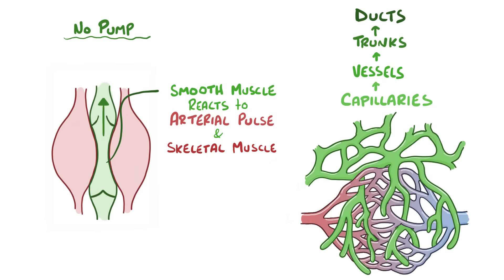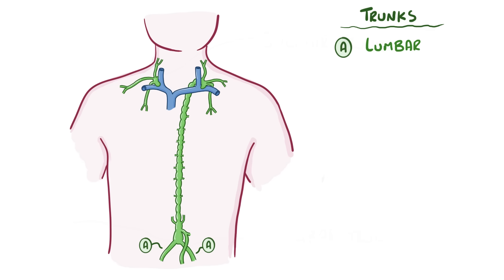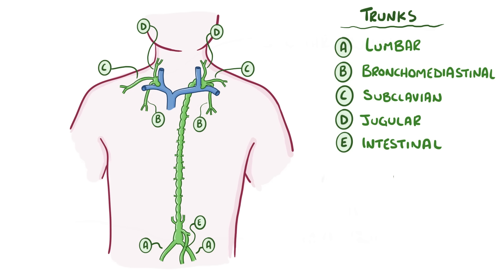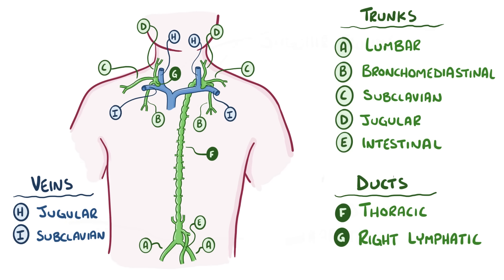To keep the lymph from sliding backwards, the lymphatic vessels have valves, just like the veins do. The lymphatic trunks are each named after the regions of the body that they drain lymph from: two lumbar trunks, two broncho-mediastinal trunks, two subclavian trunks, two jugular trunks, and one intestinal trunk. From there, lymph is delivered to either the right lymphatic duct, which collects lymph from the right arm and the right side of the head and chest, or the thoracic duct, which is much bigger and collects lymph from the rest of the body. The right lymphatic duct dumps lymph into the junction of the right jugular vein and right subclavian vein, and the thoracic duct dumps lymph into the same junction on the left side. That particular spot is perfect because the pressure there is very low, making it easier for the lymph to flow in.